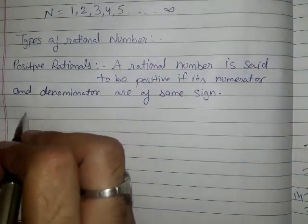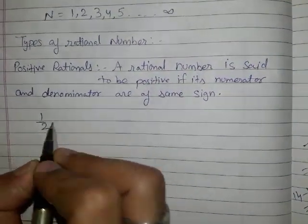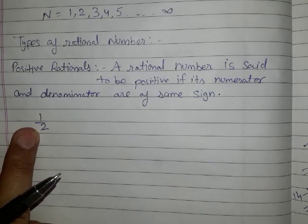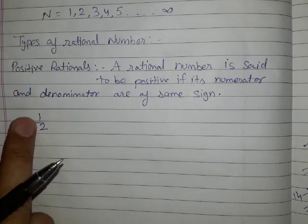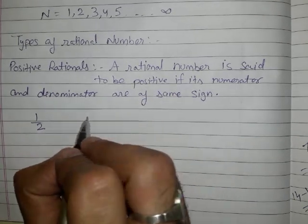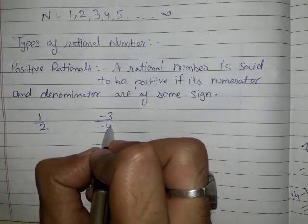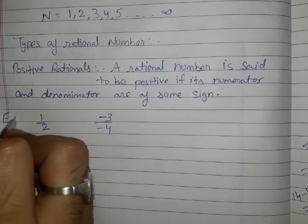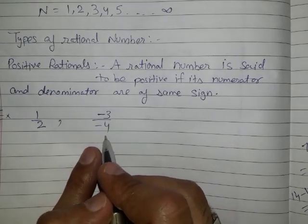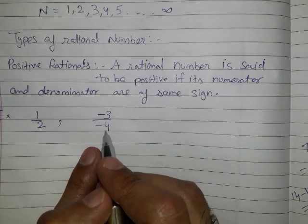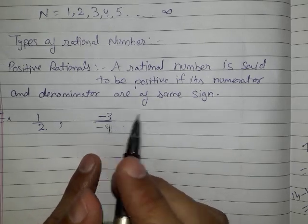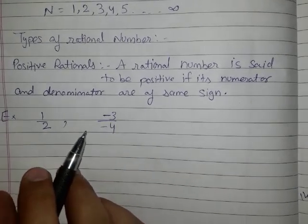For example, if I write 1 upon 2, here 1 is a positive integer and 2 is also a positive integer, so we can say that 1 upon 2 is a positive rational number. If I write minus 3 upon minus 4, again both 3 and 4 are negative integers, so both signs are the same, hence minus 3 upon minus 4 is also a positive rational number.